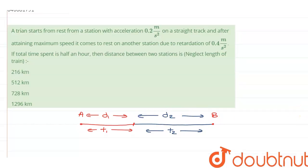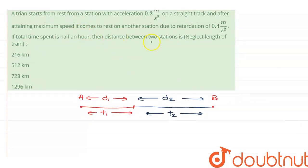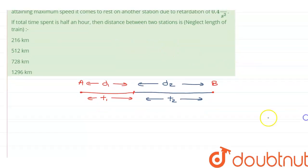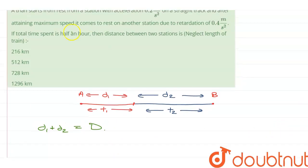So, what we have to find is the distance between two stations. So, the distance between two stations will be equal to D1 plus D2. That is the final distance capital D that we have to find out. And it says that the total journey takes half an hour.